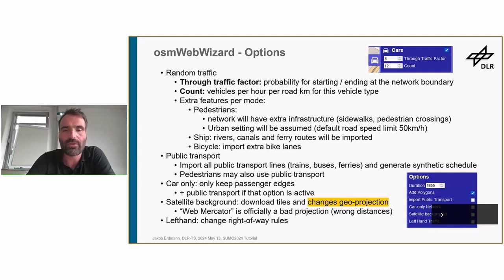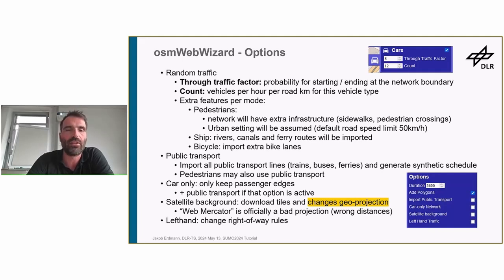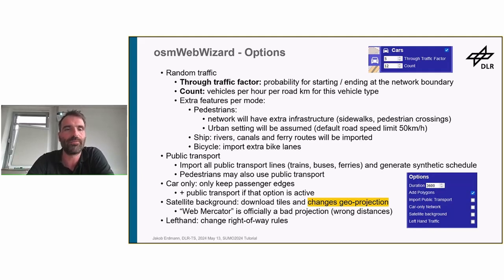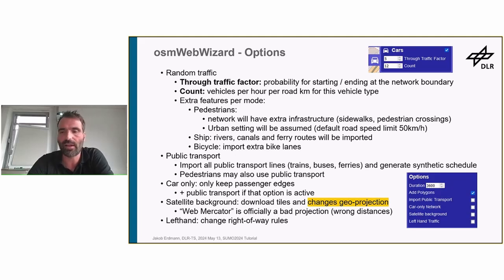Let's go into more details about the through traffic factor. This is useful if you want to discriminate between smaller and larger networks. If you have a small network, then probably most of the traffic will be through traffic starting at the network boundary, so you'll want a high through traffic factor value. Whereas if you have a larger network, lots of traffic will be starting and ending within the network, so the through traffic factor doesn't need to be so high. The count setting, set per mode, means vehicles per hour per road kilometer. With it set to 12, if you had a network with just one kilometer of roads for cars, that would give you 12 cars within one hour — the default duration of 3600 seconds.